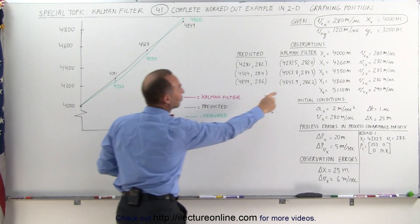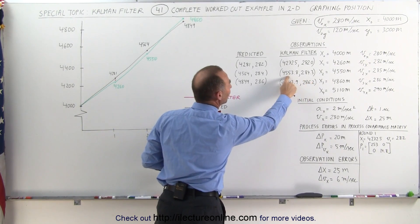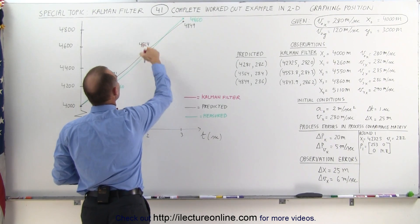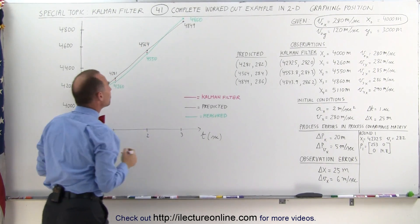The second value for after round two came out to be 4554. Again, it was somewhere between the predicted value and the measured value.